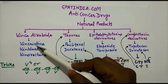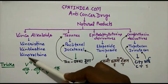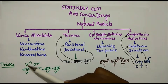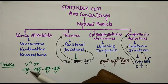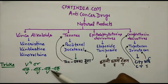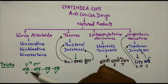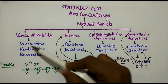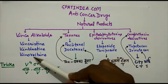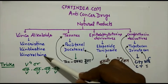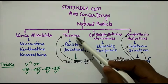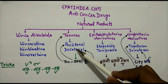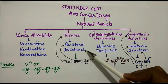In vinca alkaloids, there are three compounds: vincristine, vinblastine, and vinorelbine. These three can be learned by a simple trick — 'va va va', where each 'va' represents one of the three drugs. The next category is taxanes, which includes paclitaxel and docetaxel.